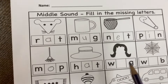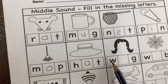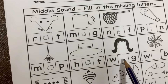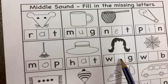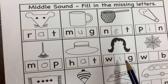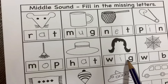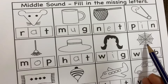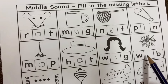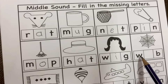Now, you will tell me. It's a wig. W... I... G. Which letter has the sound I? Letter I. Here, what do we have? Web. W... E... B. Web.